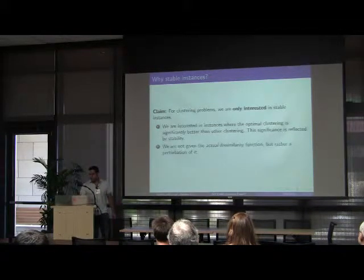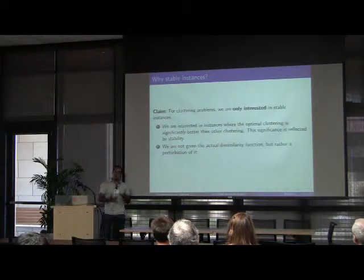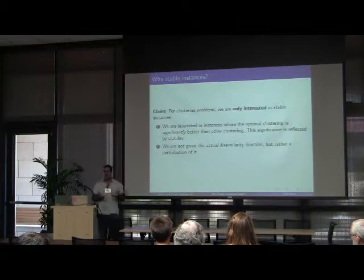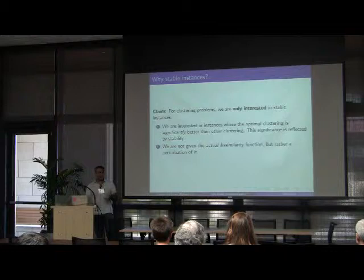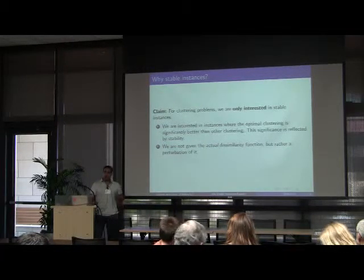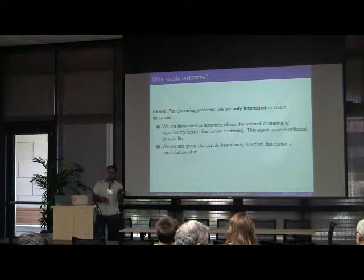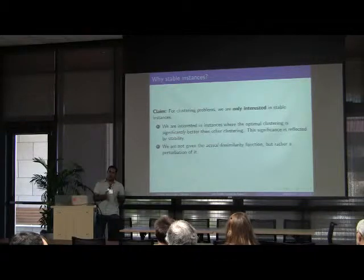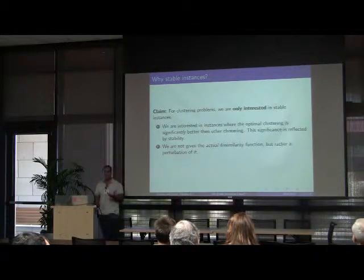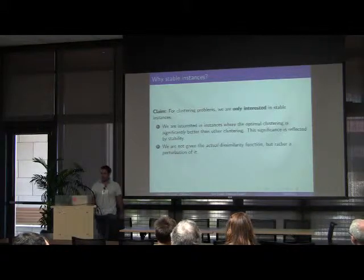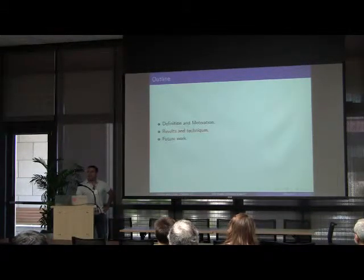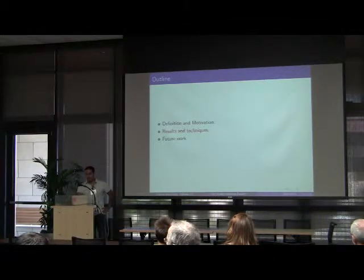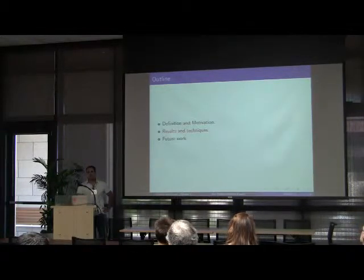Another reason is that we are not given the actual dissimilarity function, because there might not be a dissimilarity function or maybe it is hard to measure it. So the real dissimilarity function is a perturbation of the dissimilarity function we obtain. And we are interested in cases where the solution of the instance we obtain is the same as the real perturbed instance. Hopefully I motivated you enough to study stable instances. And in the next part of the talk we will see some results and proof techniques obtained for this notion.